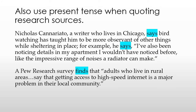Also use present tense when quoting research sources — that's something you will be doing for this upcoming essay. So you want to make sure you are careful with that. Here are a couple of examples: Nicholas Canariato, a writer who lives in Chicago, says bird watching has taught him to be more observant of other things while sheltering in place. For example, he says, 'I've also been noticing details in my apartment I wouldn't have noticed before, like the impressive range of noises a radiator can make.' Or another example: a Pew Research survey finds that adults who live in rural areas say that getting access to high-speed Internet is a major problem in their local community.